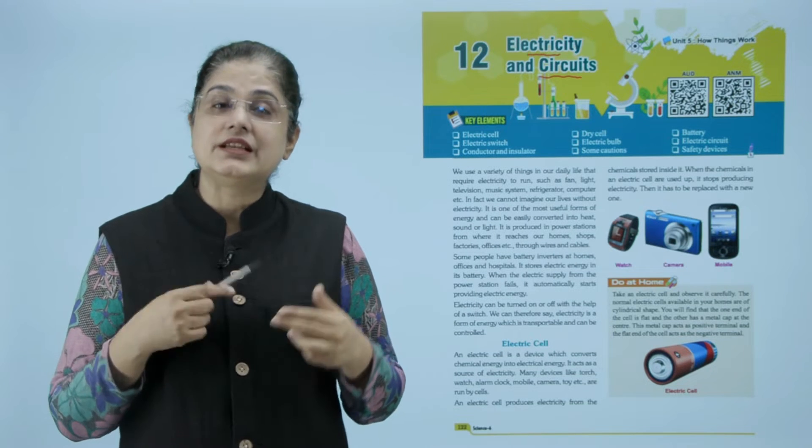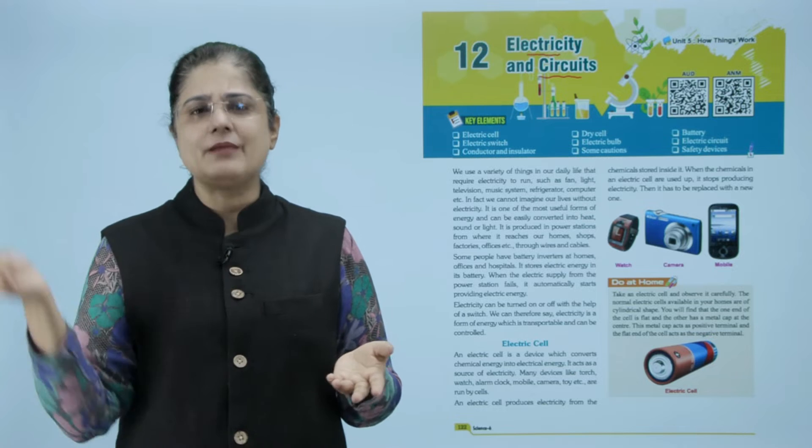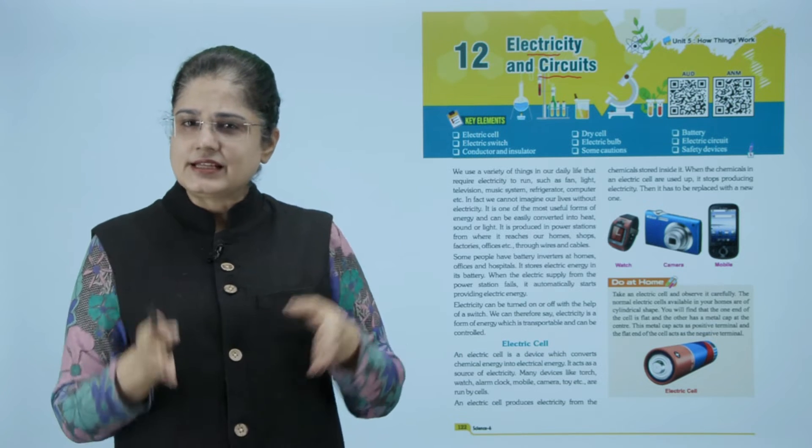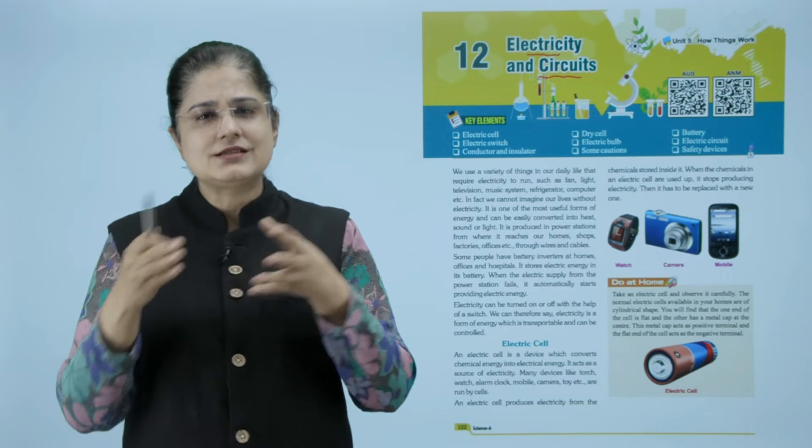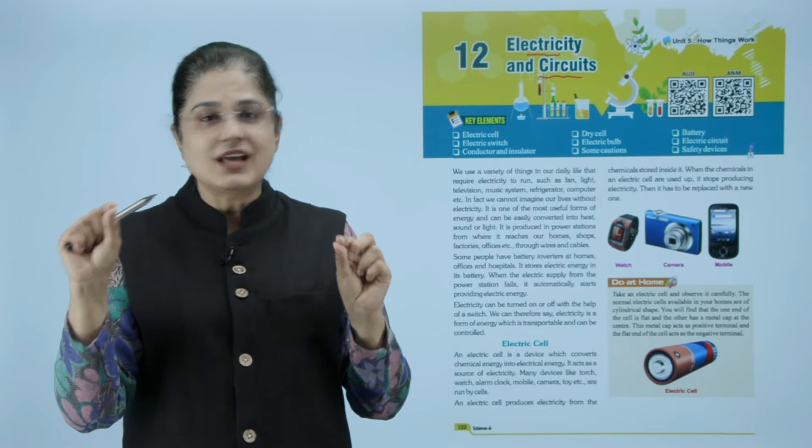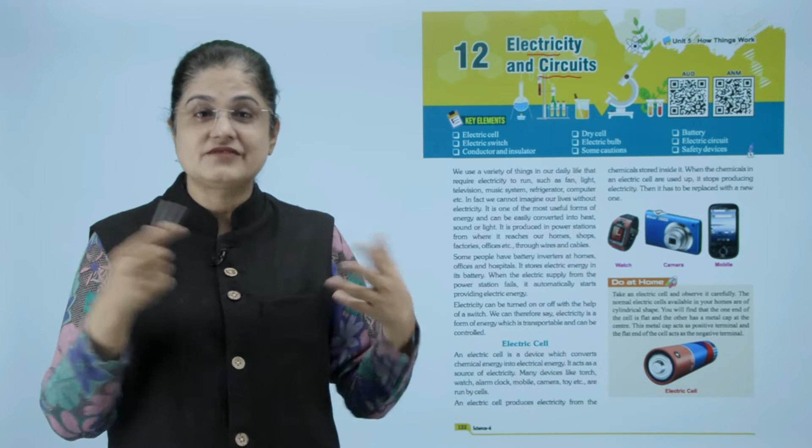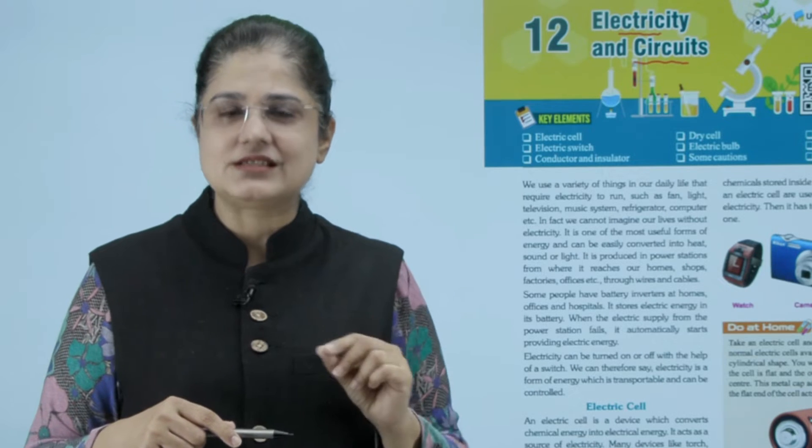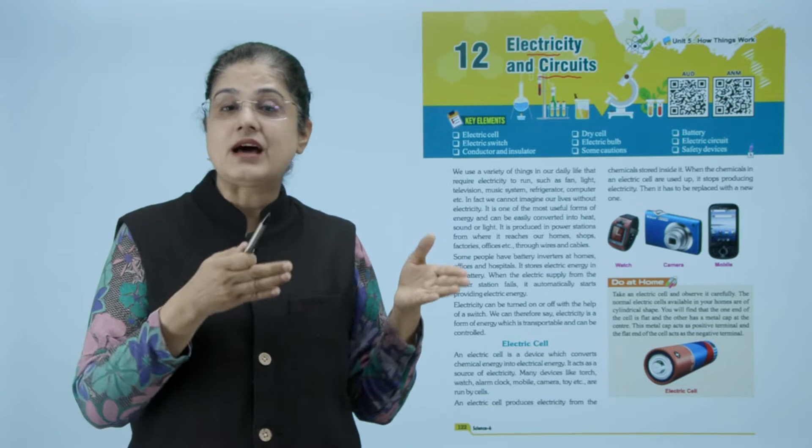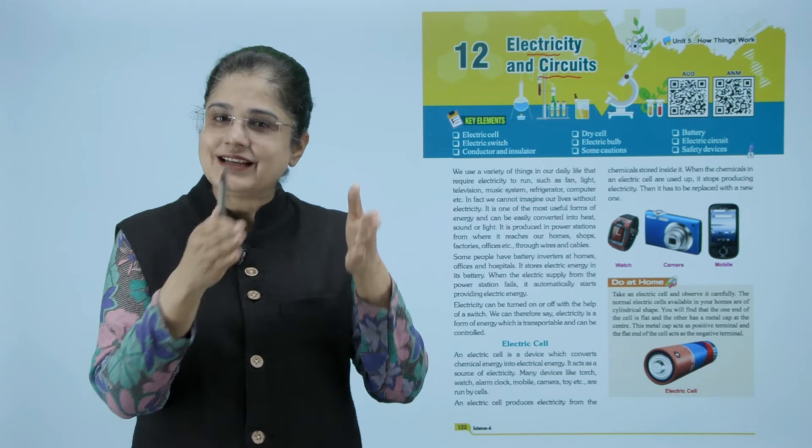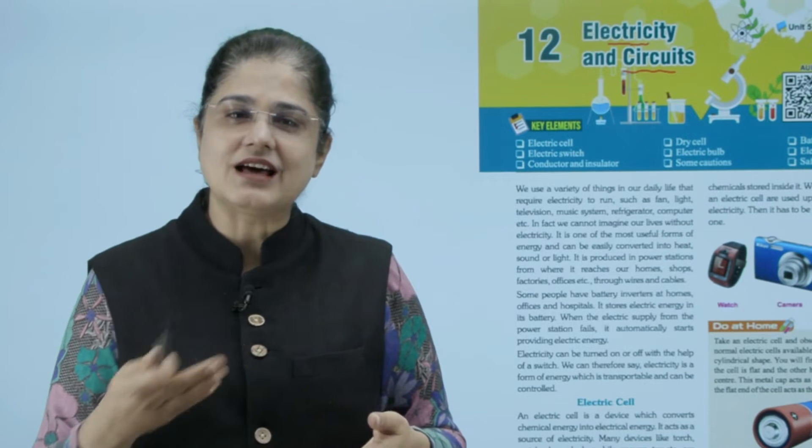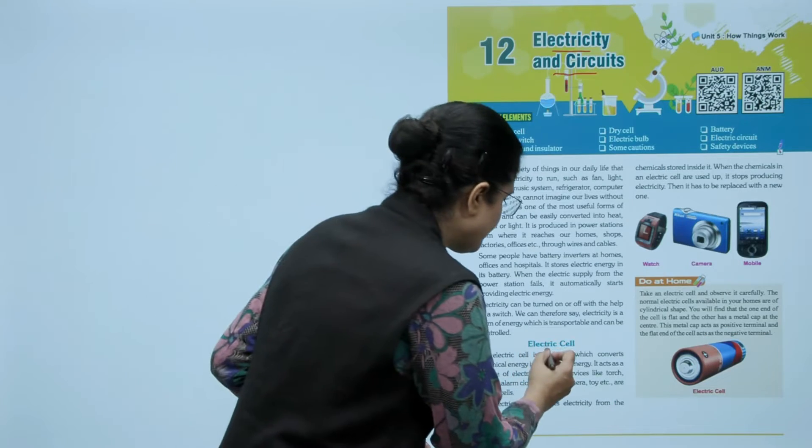Electricity हमारी life में कितनी important है, हमारी रोज की दिनचर्या electricity के बिना चल ही नहीं सकती क्योंकि जितने हमारे gadgets हैं उनको चलाने के लिए हमें electricity चाहिए। अब electricity क्या है, यह एक type की energy है जो बड़े easily हम heat, sound और light में convert कर सकते हैं। यह power stations में produce होती है और wires या फिर electric cables के through हमारे घर, offices, factories हर जगह पे पहुंचती है। कई बार किसी भी reason से हमारे घर में electricity नहीं आती, तब क्या है कि जो यह हमारी inverter की batteries हैं, इनसे electricity stored होती है तो यह वाली electricity automatically switch on हो जाती है और हमारी life आसानी से वैसे ही चलती रहती है।